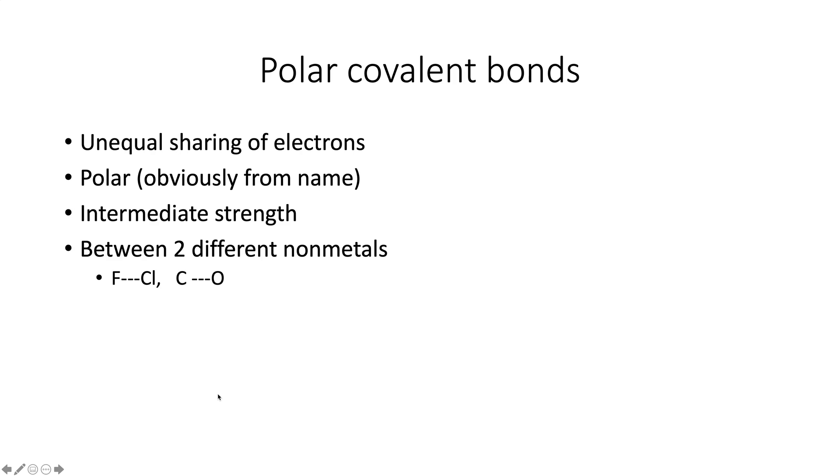The last type are polar covalent bonds. These are unequal sharing of electrons. Obviously, they're polar. We wouldn't be calling them that. These have intermediate strength. And it's between two different non-metals. So fluorine-chlorine, carbon-oxygen, phosphorus-sulfur, chlorine-bromine, anything like that.